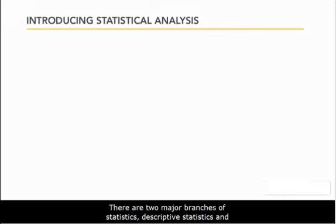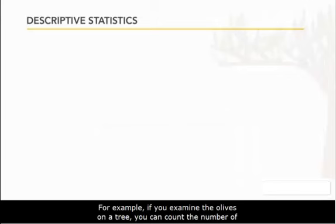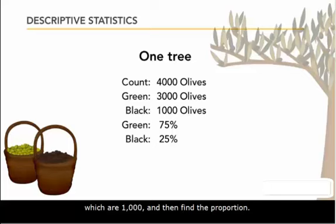You use descriptive statistics when you know all of the values in a data set. For example, if you examine the olives on a tree, you can count the number of olives — in this case 4,000 — then find the number of green olives, 3,000, and the number of black olives, 1,000, and then find the proportion. In this case, green olives are 75% of the total, and black olives are 25% of the total.